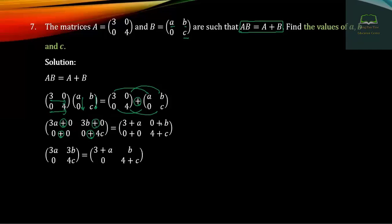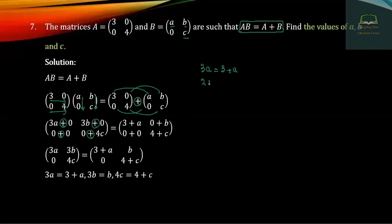This is 3 plus A, B, 0, 4C. The equality of the corresponding answer is 3A, 3A, 3B, 0, 4C. The answer is 3A, 3A. The answer is 2B. 0 equals 2. The answer is 2B. 2B equals 2.